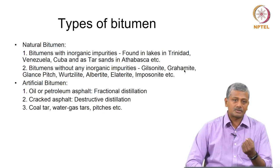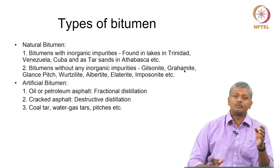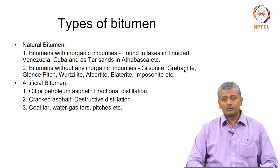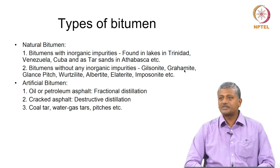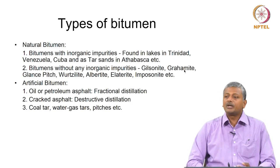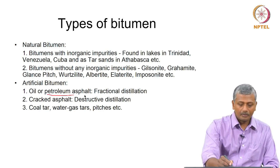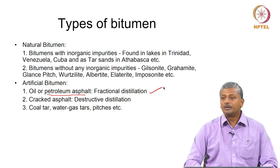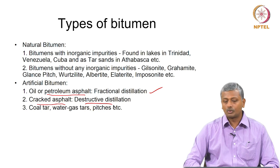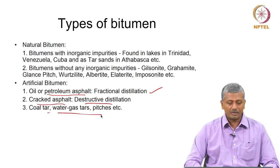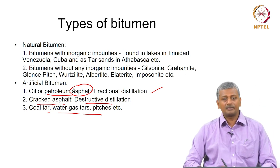Looking at the history of building materials, asphalt was one of the common natural binders used to fix large masonry blocks, before lime and cement came into being. Artificial bitumen, more commonly used today, is formed from different processes. The most common is petroleum asphalt, obtained from fractional distillation in refineries. Tar is produced from destructive distillation of coal, and other forms include coal tar, water gas tar, and pitches. For the most part, we deal with asphalt from the petroleum processing industry.